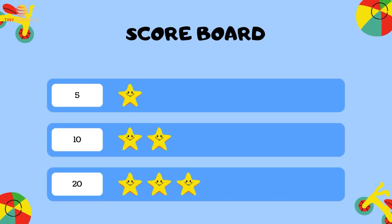Now the scoreboard. If you answered five, you get one star. If you answered ten, you get two stars. And if you answered all twenty, you get three stars.